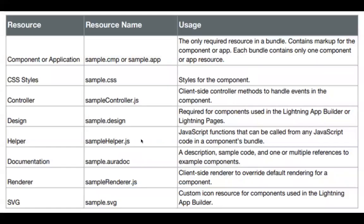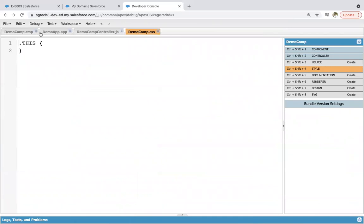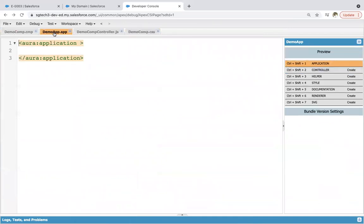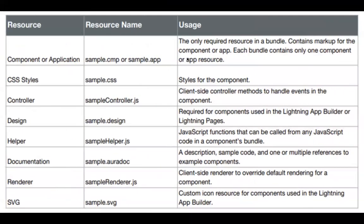Here is the complete list of resources and their uses. For a component, the view file is named 'componentName.cmp' — for example, 'sample.cmp'. For an application, it is named 'sample.app', as already shown with 'DemoComp.cmp' and 'DemoApp.app'. The .cmp or .app file is the only required resource in the bundle — if it is blank, nothing will be displayed or rendered in the browser. Each bundle contains only one component or app resource, and you must write some code in this file for it to display.